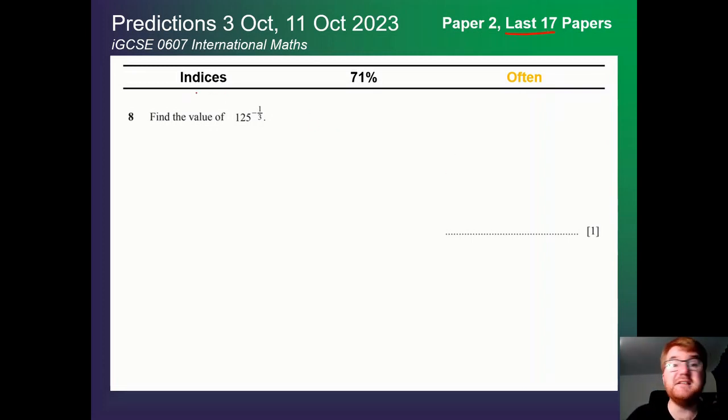Our first topic here is indices. It comes up most years at 71%, so a slight dip here. But you can see these questions can come up even once or even twice on the exam. Usually fairly straightforward questions on the paper too for one or two marks.